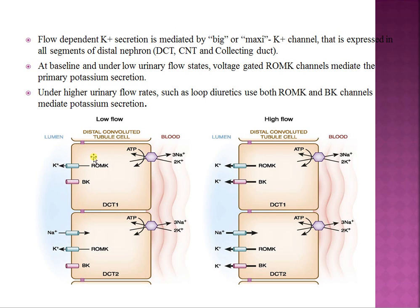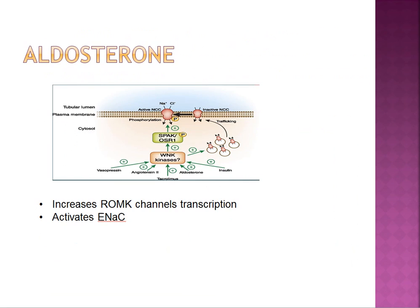Once sodium enters cells through ENaC, it is pumped out via the 3Na+/2K+-ATPase — a counter-transport where 3 sodium ions exit the cell and 2 potassium ions are taken in from the bloodstream. So in a low-flow state, only ROMK channels are active; in a high-flow state, both ROMK and BK channels are active, leading to potassium secretion. Remember: ROMK channels and BK channels, located in the DCT.